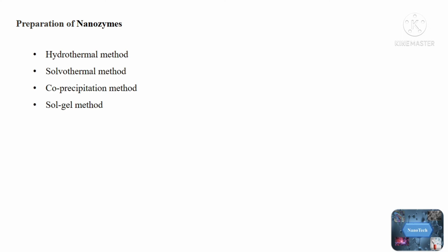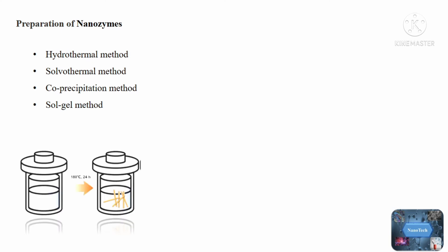Hydrothermal method. The hydrothermal method is an aqueous reaction that recrystallizes materials in a closed system at high temperatures and high vapor pressures. This method was used to create nanozymes with crystalline phases that are not stable at the melting point.